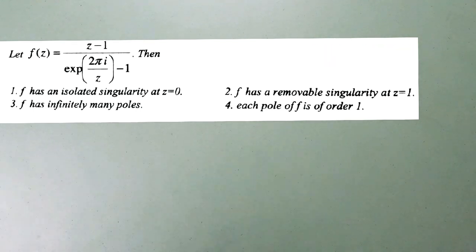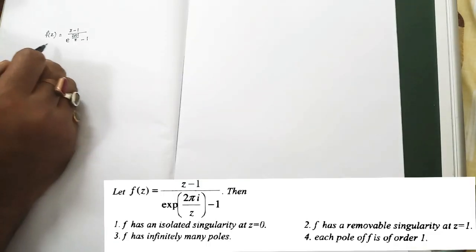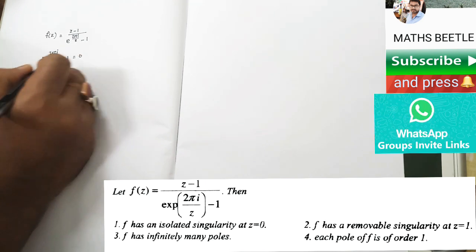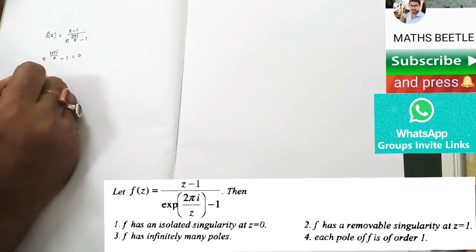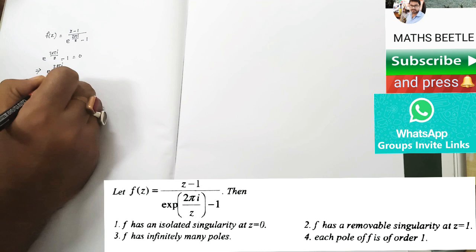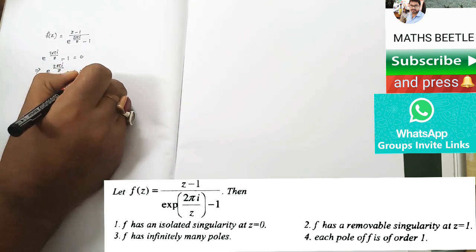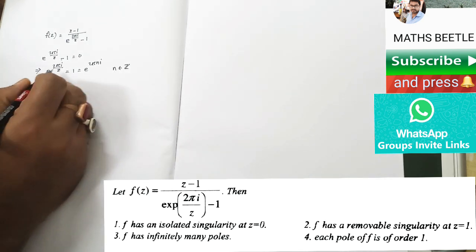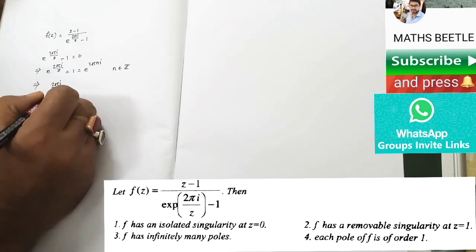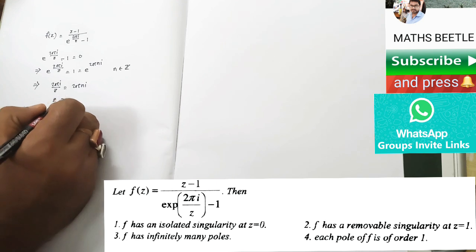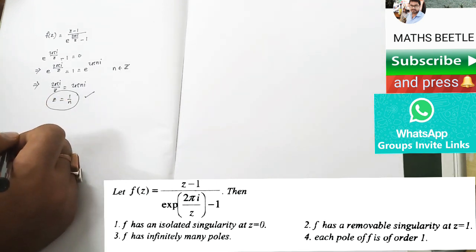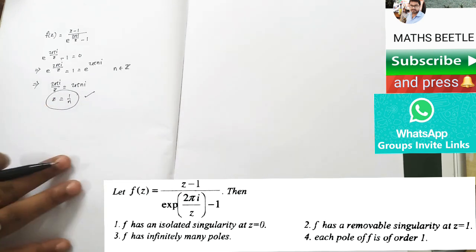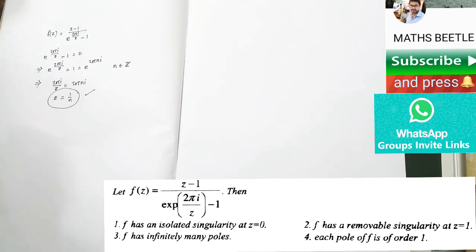So this is our f(z). The singularities are given by taking the relevant part and making it equal to zero. That gives e^(2πi/z) = e^(2πni), where n is an integer. That will give you z = 1/n, where n belongs to the integers. These are your singularities.